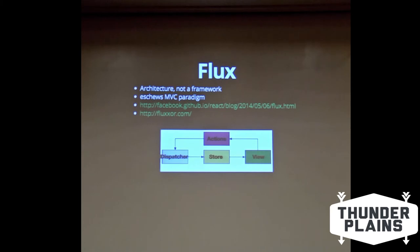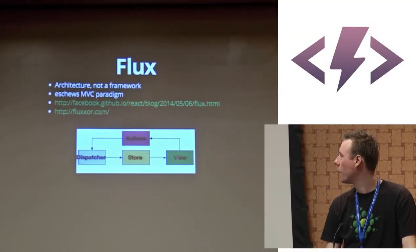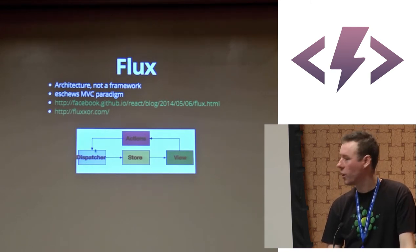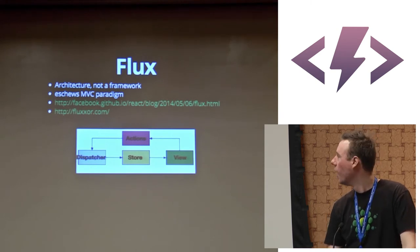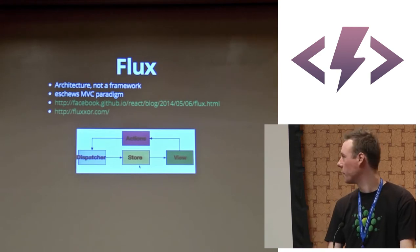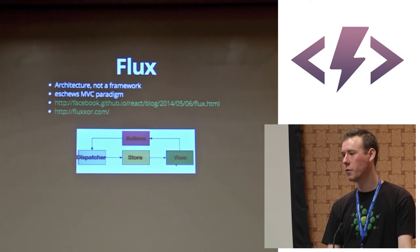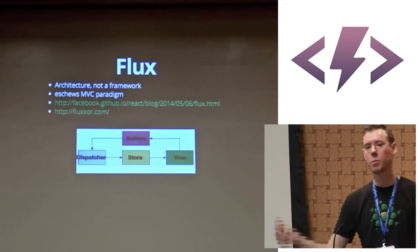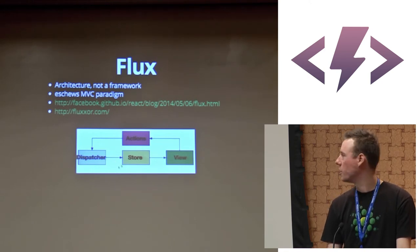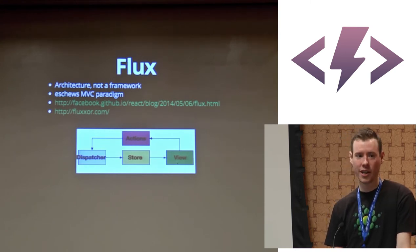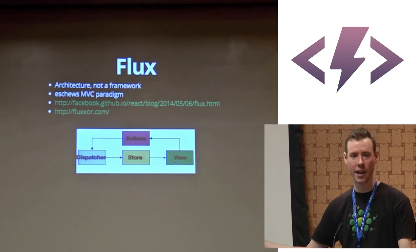Instead of model-view-controller, you have a view which emits actions, which go to a dispatcher — a central event bus or dispatching channel — which then notifies a store. That's really where your model lives. Views have listeners wired up to stores. For example: a to-do view dispatches an add-to-do action when you type into an input. That goes to the dispatcher, which tells the to-do store to add a to-do, and your view has a listener that triggers a re-render.